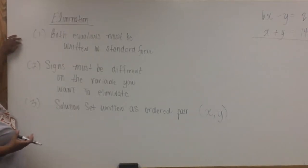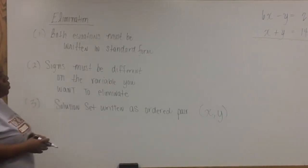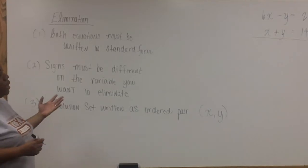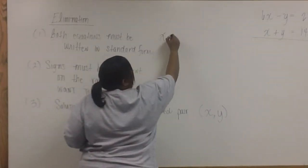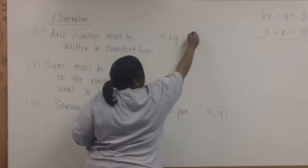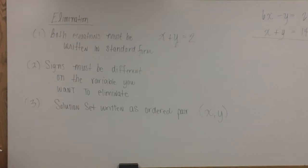If you're going to use elimination, there are three things that you should be aware of. The first is, in order to use elimination, both equations must be written in standard form. An equation written in standard form means that the variables are on one side of the equal sign, and the constant is on the other side of the equal sign.